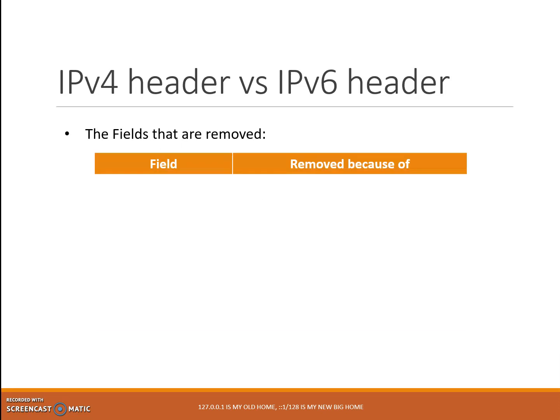Next, the fields that are removed from IPv6. Number 1: internet header length. This field is not needed in IPv6 because the main IPv6 header is fixed to 40 bytes in length. The additional headers are linked as indicated in the next header field.